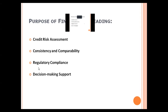The third purpose is regulatory compliance — banks often need to comply with regulatory requirements that dictate how credit risk should be assessed, and financial spreading helps ensure the bank's credit analysis process meets these standards. The fourth purpose is decision making — the output of financial spreading serves as the foundation for credit decisioning, helping loan officers, lenders, and credit committees make informed judgments about lending.